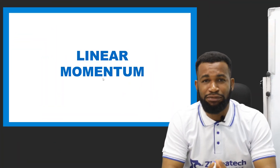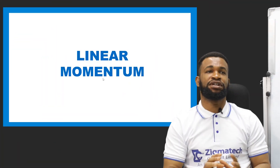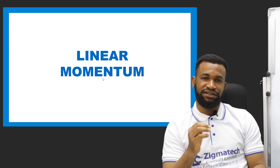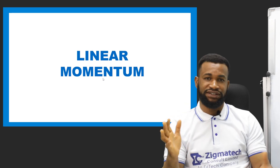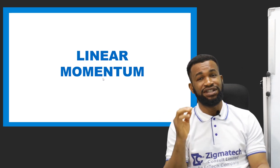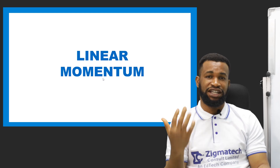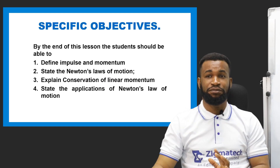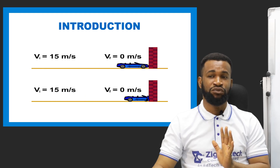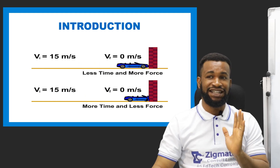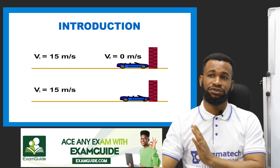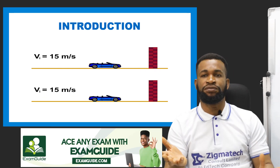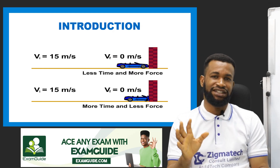Today, we want to talk about linear momentum. When we talk about momentum, we are talking about impact — that is for a layman's understanding or choice of words. Linear momentum talks about impact. I want to show you this little clip for you to understand. Look at this — see the car? The car is moving and it hits the wall. You see that? And it makes an impact.